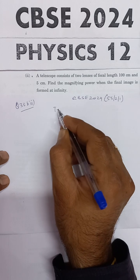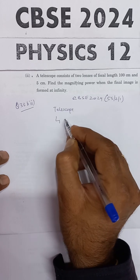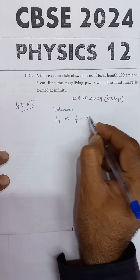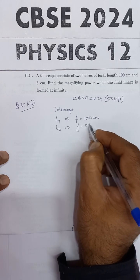This is the first thing that is given, that is a telescope. And there are two lenses. L1 is having a focal length of 100 cm, and the second lens is having a focal length of 5 cm.